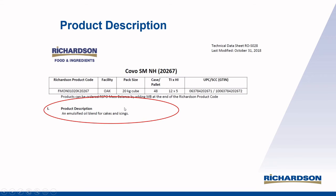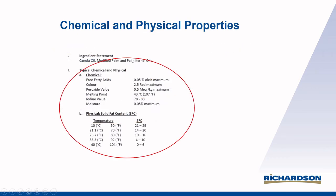Here we go — emulsified oil blend for cakes and icings. Different applications are going to help the supplier identify what's the important information. Now we're starting to dig into chemical and physical properties, and we'll walk through each of these. Free fatty acids — if you think about it, we're buying triglycerides. We want those fatty acids attached to a glycerol backbone, and if they are released through hydrolysis, that decreases the stability of our fat, so we want to have a low free fatty acid content. They're doing it on oleic acid equivalents, and during the analysis methodology this is coming off as a weight-based percentage. In the analytical methodology, they use a standard curve based on oleic acid.